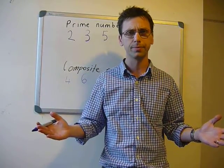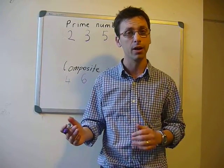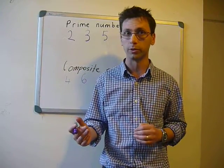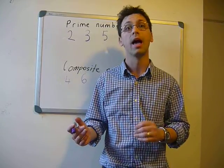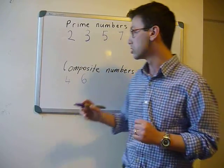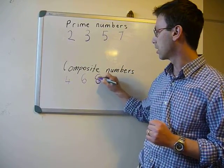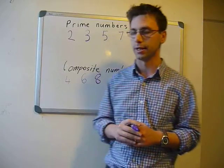Eight? Now you're understanding: four times two and eight times one. So eight is a composite number.